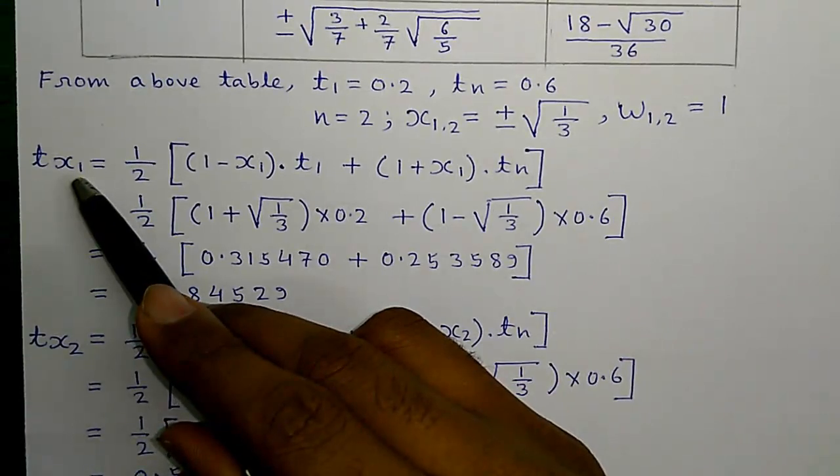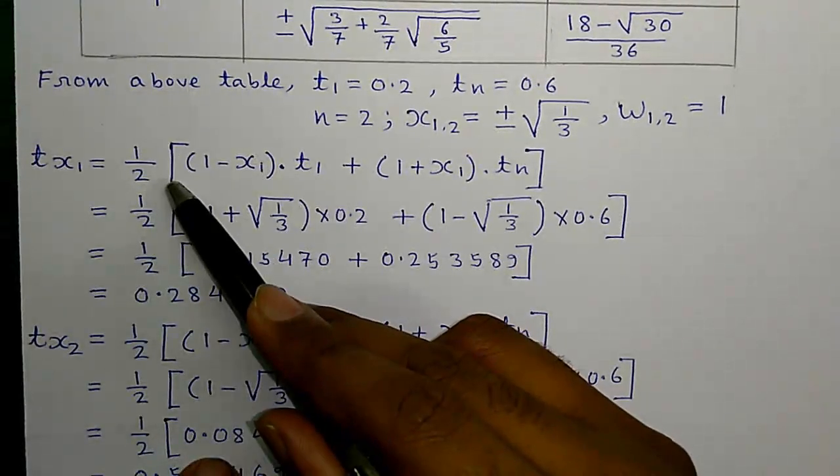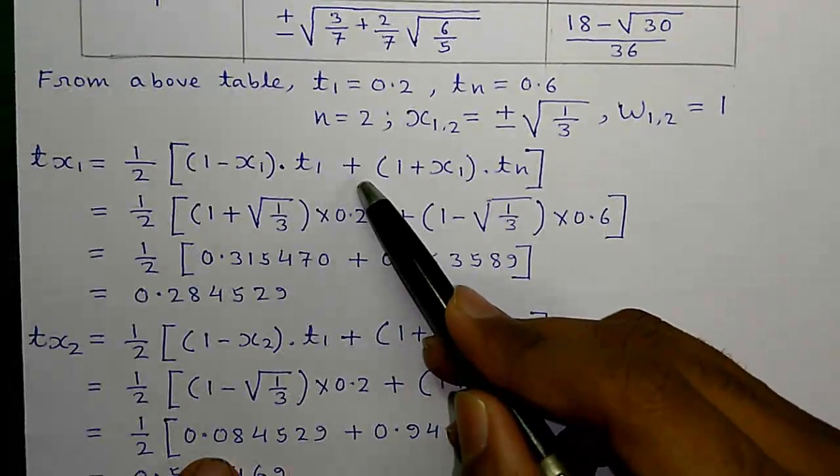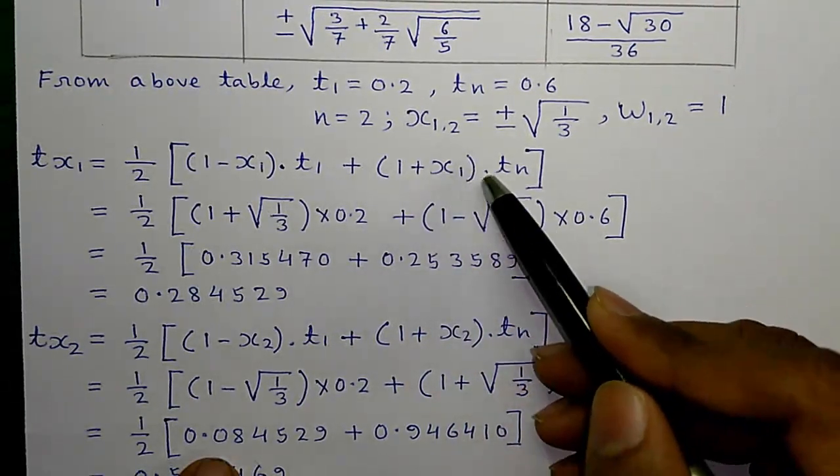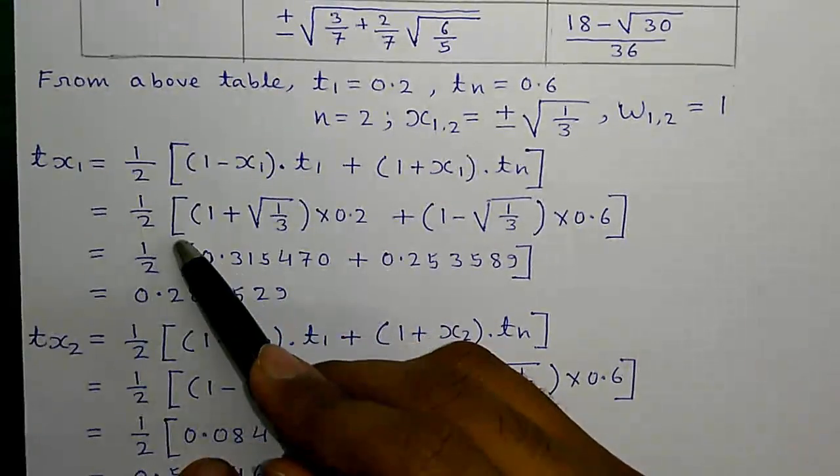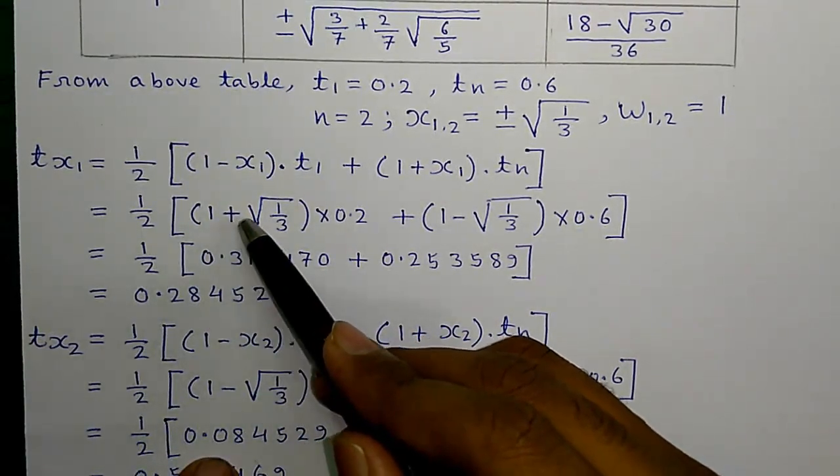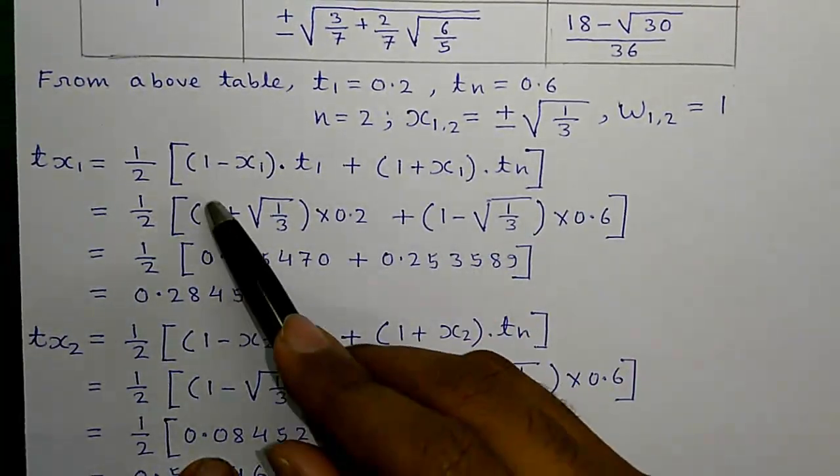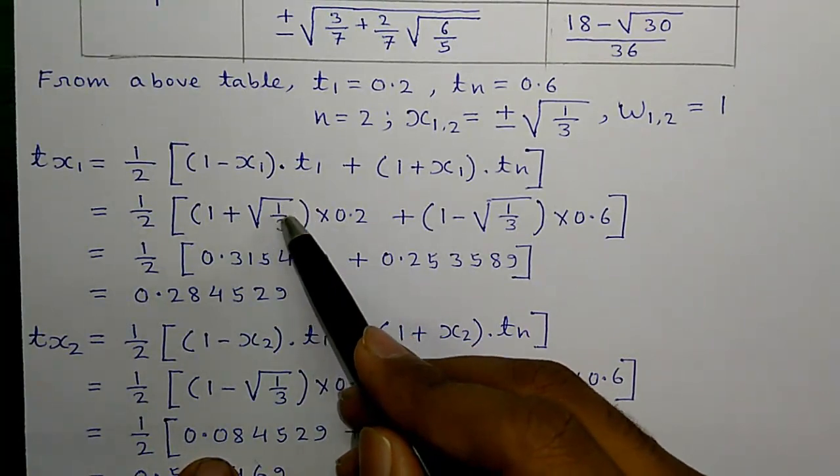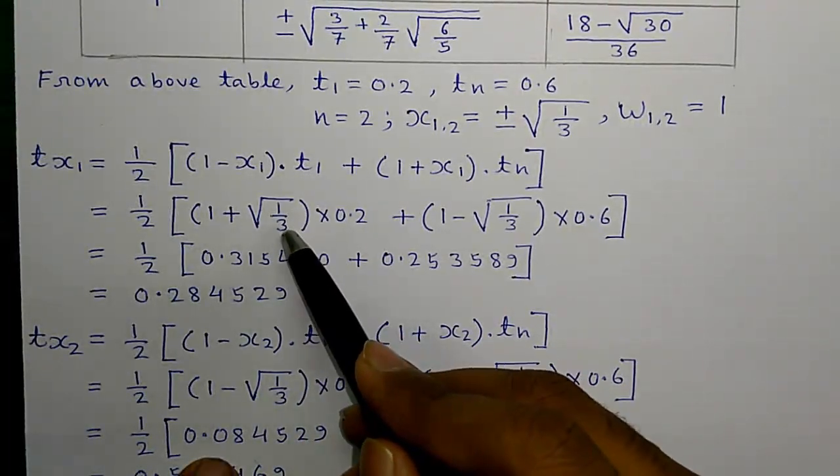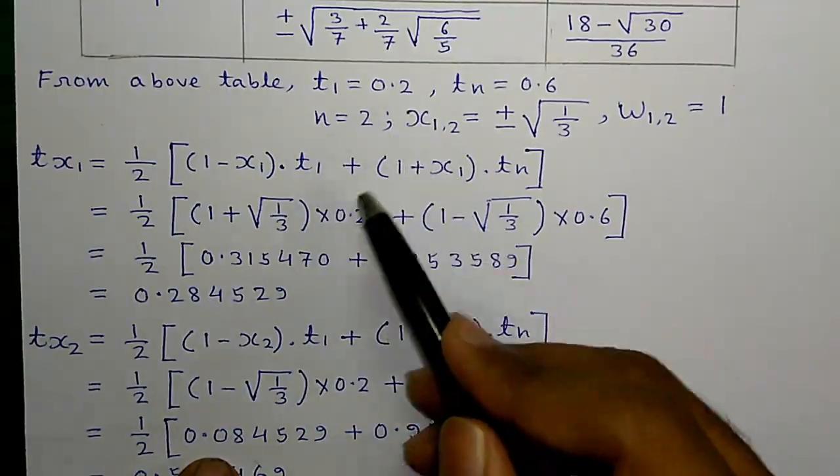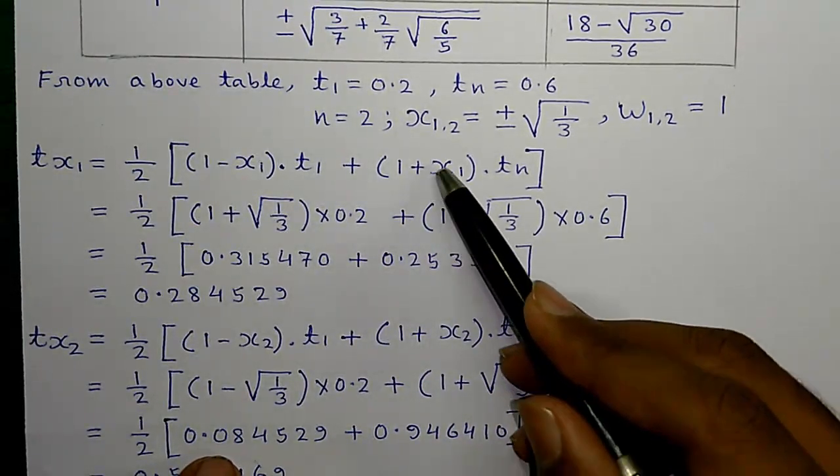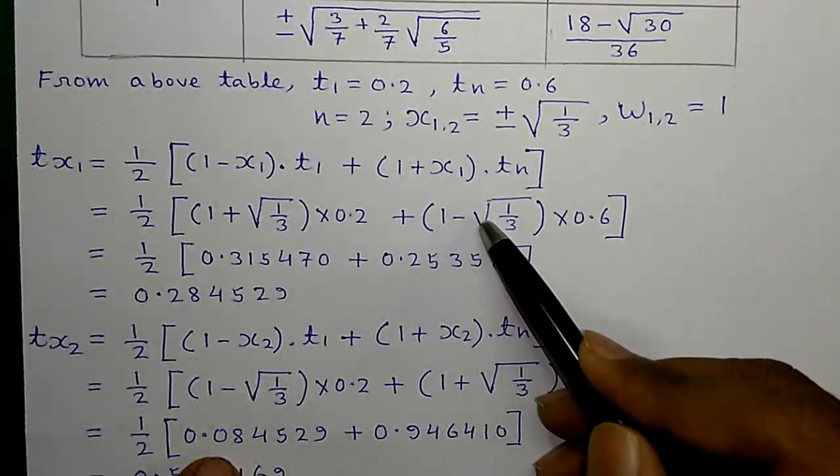So, first we will find out that Tx1 which is given by half into 1 minus x1 times T1 plus 1 plus x1 times Tn equals to half into 1 plus root over 1 by 3. Here, we are taking the minus part of this. That is 1 minus of root over 1 by 3. That is 1 plus root over 1 by 3 times T1 which is 0.2 plus 1 plus of minus of root over 1 by 3.